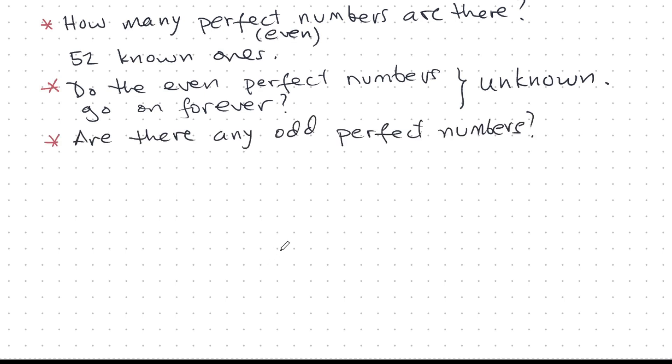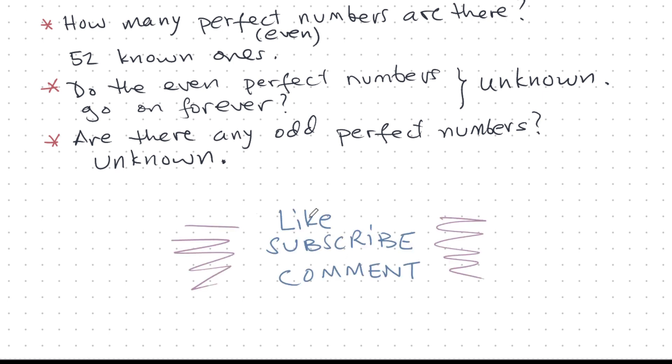Are there any odd perfect numbers? All we've been talking about are the even ones. What about the odd perfect numbers? Is there such a thing? And the answer is unknown. We have no idea. If there is even one we don't know. There could be an infinite number of them or there could be none of them. We don't have any idea at this moment.